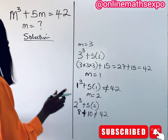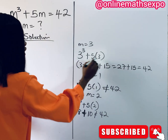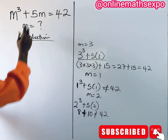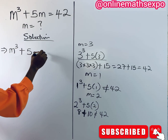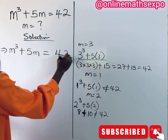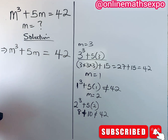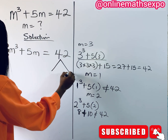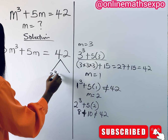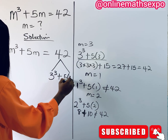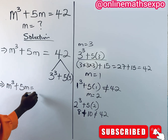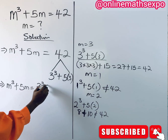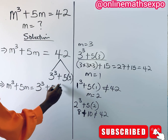This means that the 42 on the right side we are going to replace with its equivalent. So let's rewrite the equation as m³ plus 5m equals 42. Remember we said we are going to rewrite 42 as 3³ plus 5 times 3. Substituting, we have m³ plus 5m equals 3³ plus 5 times 3.